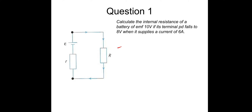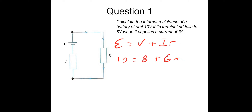Using EMF equals V plus Ir: 10 equals 8 plus 6r. So 10 minus 8 equals 2, which equals 6r. Therefore r equals 2 divided by 6, giving an internal resistance of 0.33 recurring ohms.